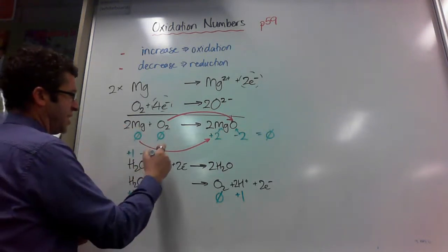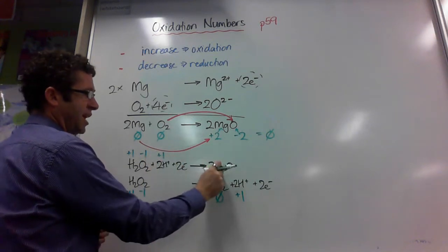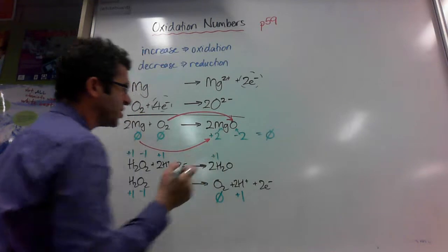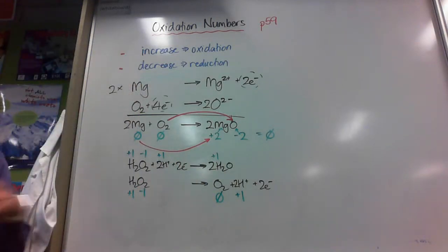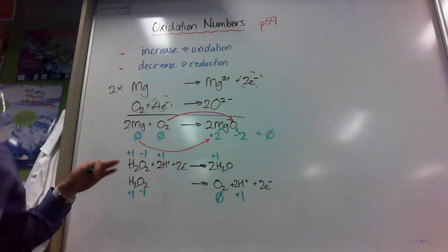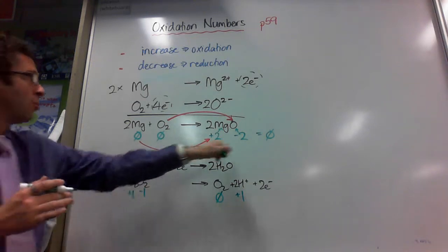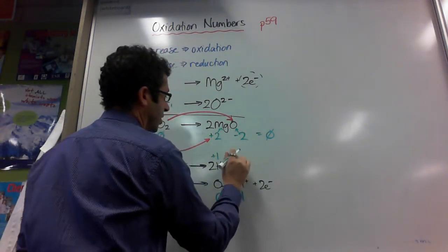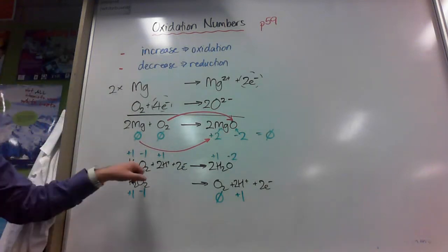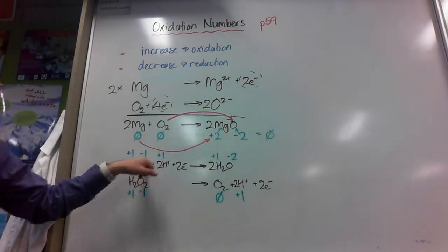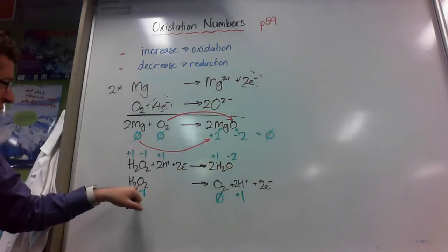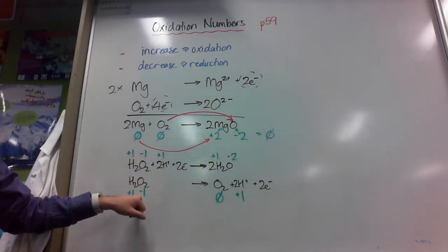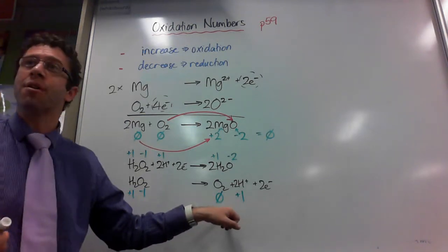Up here, the hydrogens here are plus one. The hydrogens here are plus one. But the oxygen is in a compound and it's not H2O2. So, therefore, my earlier rule comes in that it must be minus two. So, in this case, the oxygen has been reduced from negative one to negative two. While at the same time, in another molecule of it, it's been oxidized from negative one to zero.